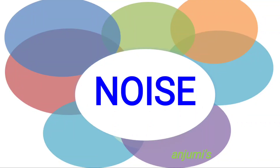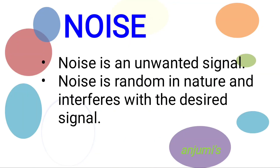In this video we are going to see noise. Noise — unwanted electrical signals that are mixed with the original message signal during the transmission or processing of information through the communication channel — are called noise signals. Noise distorts the original message signal. Generally, noise can be found in two forms: predictable or unpredictable.